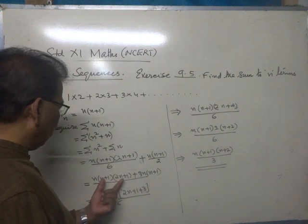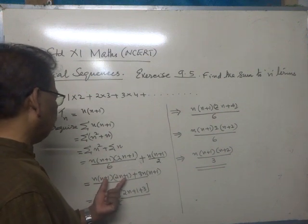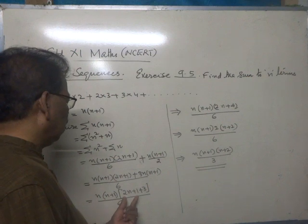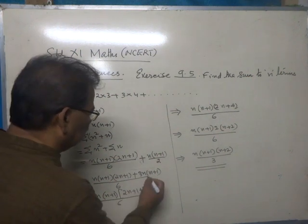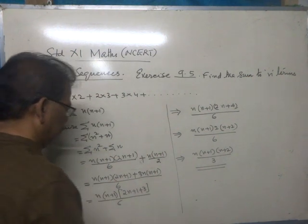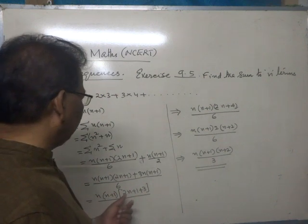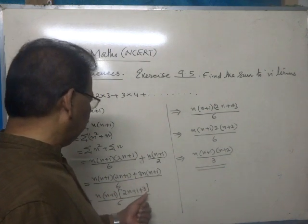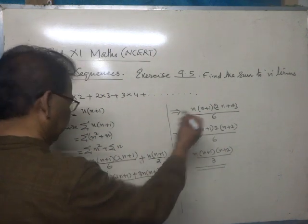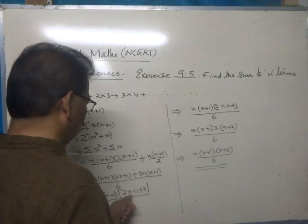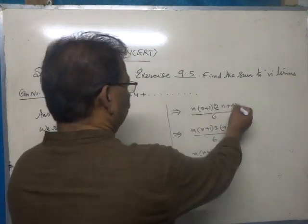Dividing the first term by n(n+1), we get 2n+1. Dividing the second term by n(n+1), we get 3. Now for the simplification: 2n+1+3 = 2n+4.